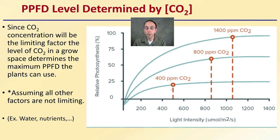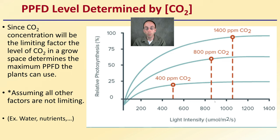If we're at 400 parts per million for CO2 — natural atmospheric conditions — you're looking at a light intensity of around 500 PPFD on this graph. If we double our carbon dioxide, we go from about 500 to about 850 PPFD. And at 1,400 ppm CO2, we can go over 1,000 on the light intensity. So keep in mind: yes, you can give plants more light, but if they don't have the CO2, they will not be able to utilize that light.